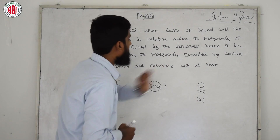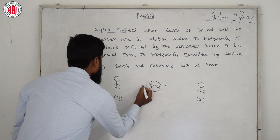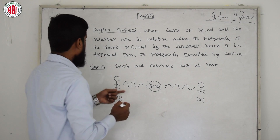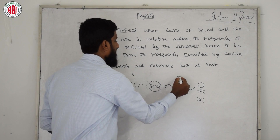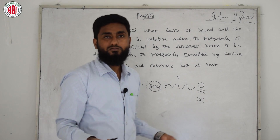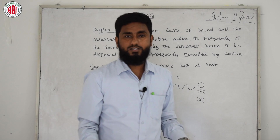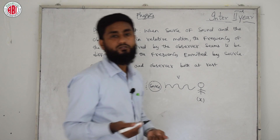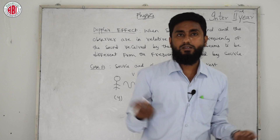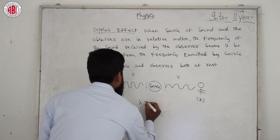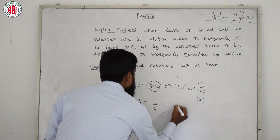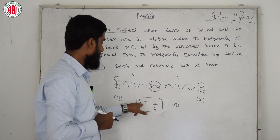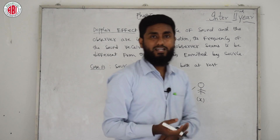In Case 1 — source and observer both at rest — the source emits waves that travel to the observer at velocity v. The velocity at both ends is v. The key formula is: λ = v/f (Equation 1), derived from v = λf. This equation is very important and must be remembered.